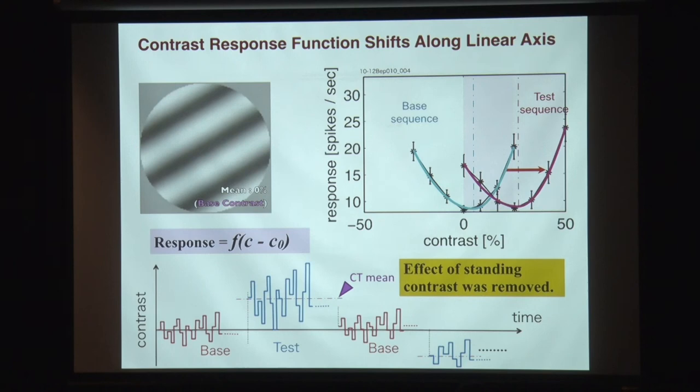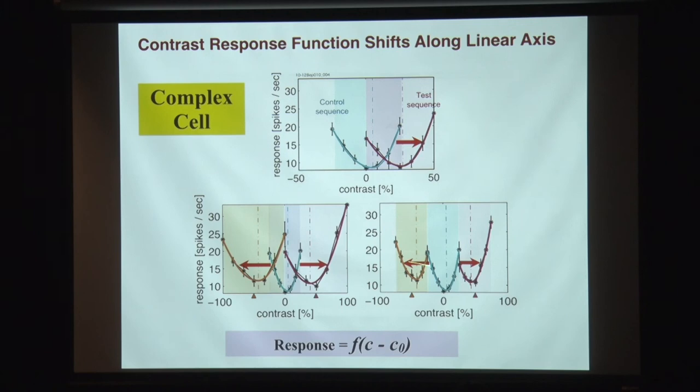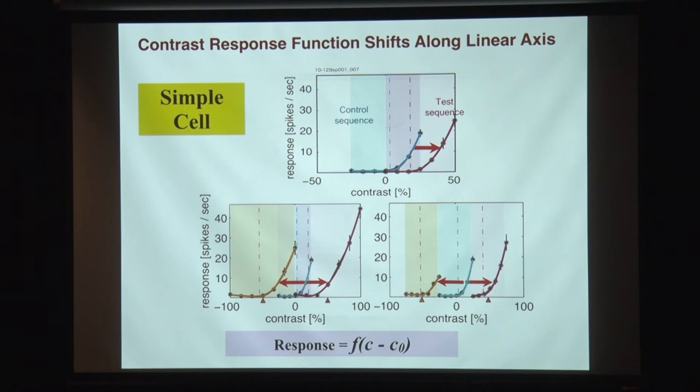Just to show more cases — we tried different widths of contrast modulation, and it shifts laterally. What we are seeing is this offset of the function. That's a complex cell. The simple cell doesn't do full-wave rectification — it does half-wave rectification — so you get a different shaped curve. But regardless, you get this same shifting.